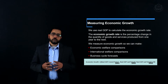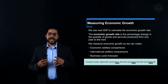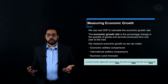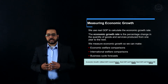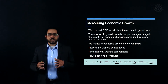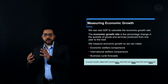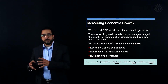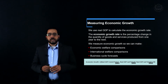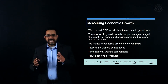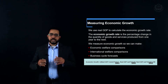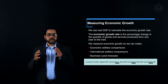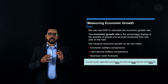Economic growth is a very important economic number. It shows us how we did economically — did we do well or was our performance not as expected? Economic growth is the percentage change in the quantity of goods and services produced from one year to the next. You can see the formula on screen: economic growth equals real GDP in the current period minus real GDP in the last period, over real GDP in the last period.